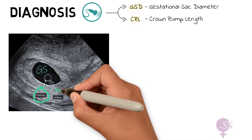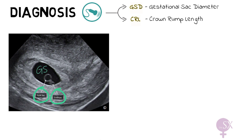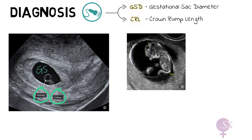Here we have the embryo. The GSD is the mean diameter of the gestational sac, and the crown-rump length is the distance from the crown — the head of the fetus — to the rump, the buttocks of the fetus. This image shows more clearly how this would be measured. In a viable pregnancy, we would also be able to see a small flicker on the ultrasound, which represents the fetal heart.